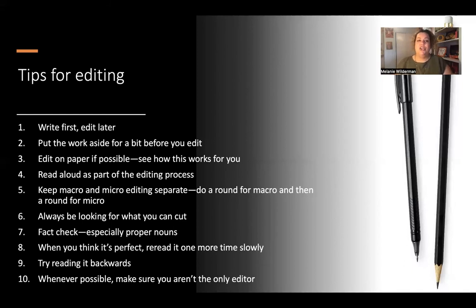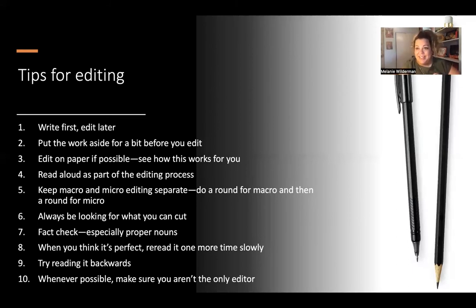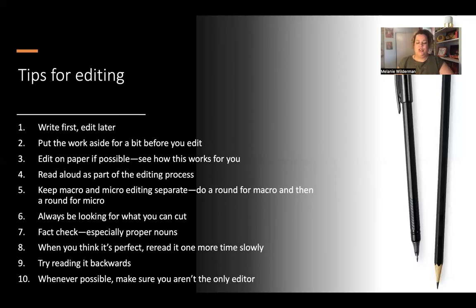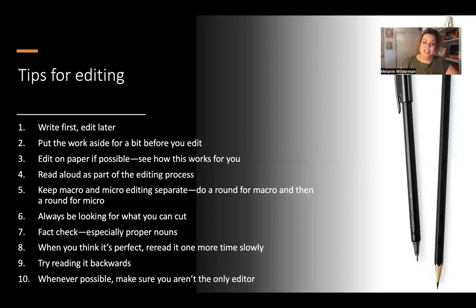Number six: always look for what you can cut. Even if you've edited well and paid attention to writing concisely and tightly, there's probably still a little bit you can cut. The best editors can take even a tight piece of writing and make it just a little bit tighter. Number seven: fact check numerous times, especially proper nouns — people's names, names of businesses, states — the things that we capitalize. Make sure those are spelled and punctuated correctly. Those are the types of mistakes that really get us in trouble. People hate it when their names are spelled wrong, but beyond that, it can seriously get you into legal or ethical issues in certain situations. Fact check, especially those proper nouns.